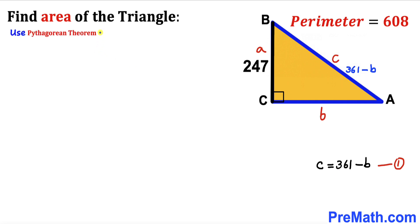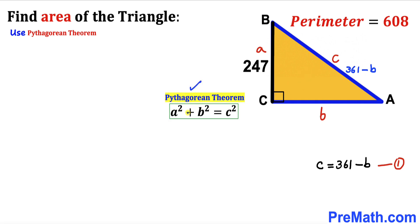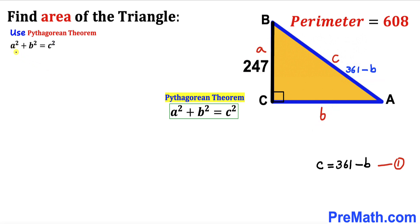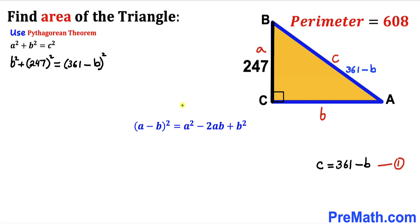Now we apply the Pythagorean theorem to triangle ABC: a squared plus b squared equals c squared. In our case, the hypotenuse c is 361 minus b, and our two legs are 247 and lowercase b. Substituting, we get b squared plus 247 squared equals (361 minus b) squared.